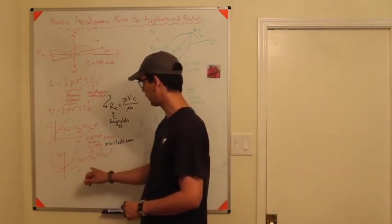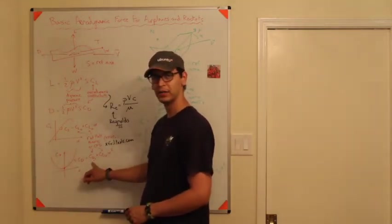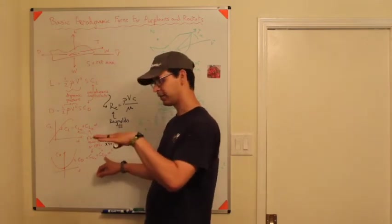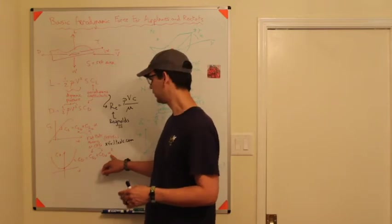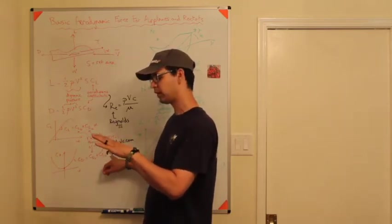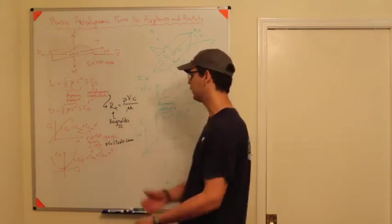Drag essentially has the same kind of thing. When angle of attack is zero, you're going to have CD0, you're going to have some drag just from flying. And as you increase angle of attack, your drag actually goes up quadratically. So you have to be careful, if you increase angle of attack, you are getting more lift, but you're also getting more drag. And so there's a trade-off there.